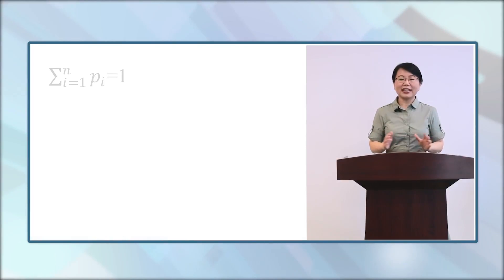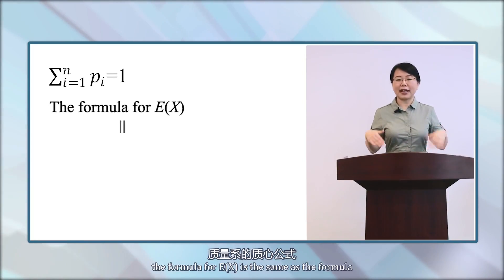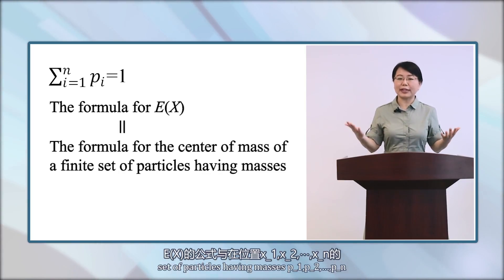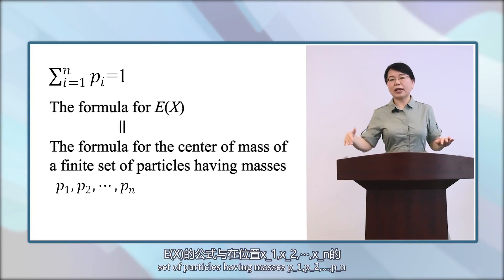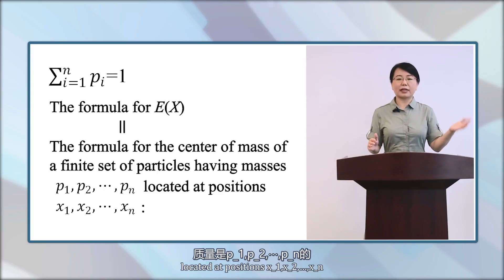Since the sum of probability is 1, that is, all probabilities must sum to 1, then the formula E(X) is the same as the formula for the center of mass of a finite set of particles having masses P1, P2, until Pn, located at positions X1, X2, to Xn.